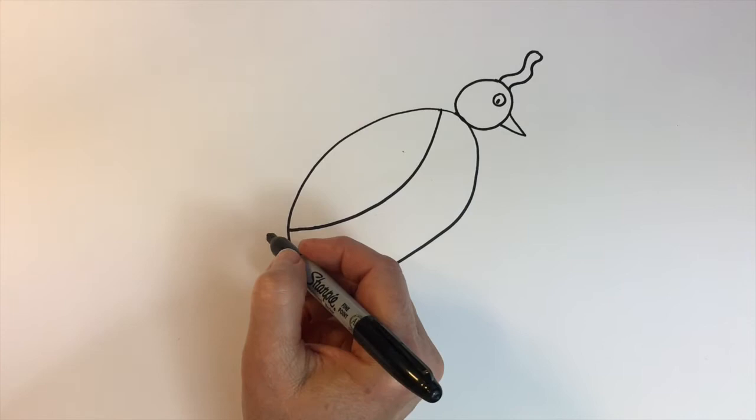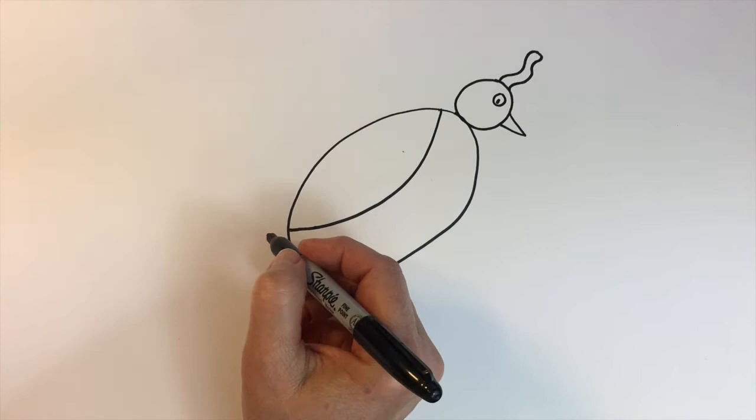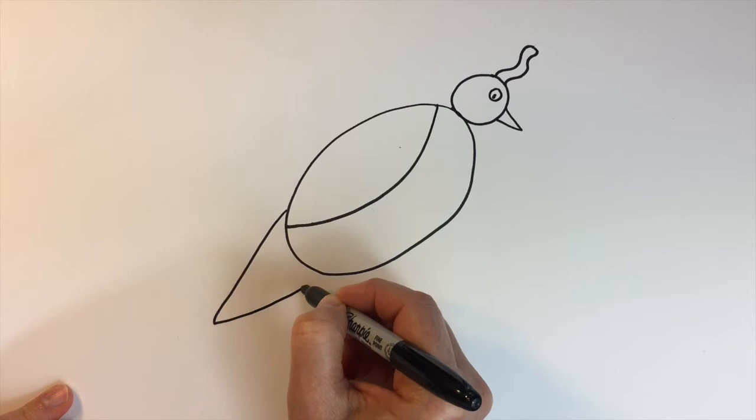His tail will be a V on a slant or diagonal and then just some curves back there.